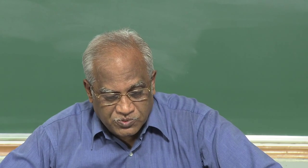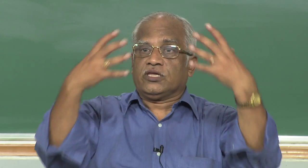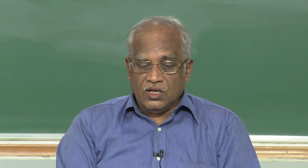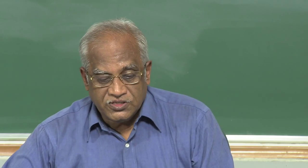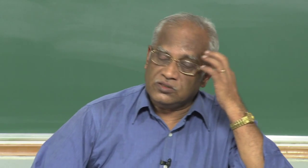The heat, if removed from the containment, would help in two ways: it will maintain the temperature of the containment, and it will help in reducing the pressure within the containment. There are two types of containment systems: one is a containment pressure suppression pool, another is the containment passive heat removal, and the third is passive containment spray.